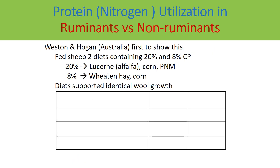Here is a good example from a research experiment in which sheep were fed two diets: one containing 20% crude protein with alfalfa and corn, and the other containing 8% crude protein with wheat hay and corn. Notably, these two diets supported identical bull growth, which is an important conclusion — despite one diet having 12% less protein than the other.